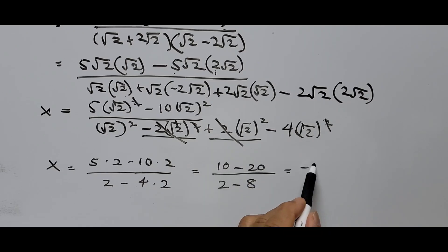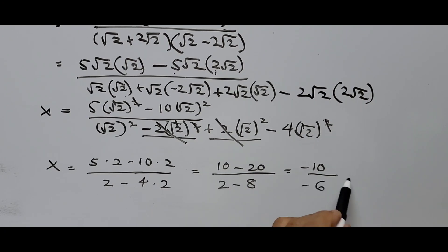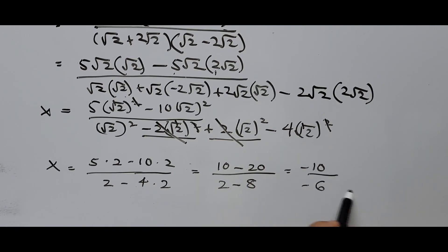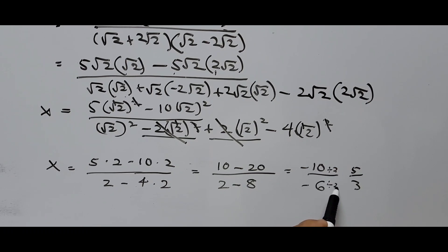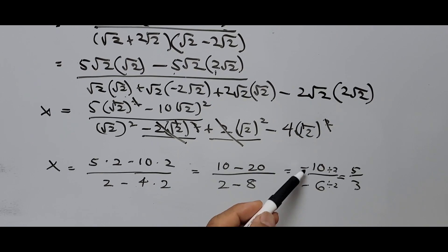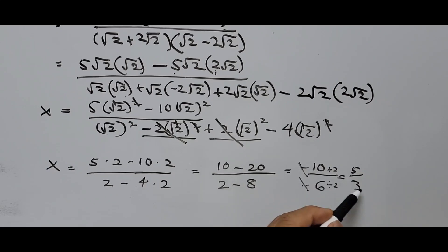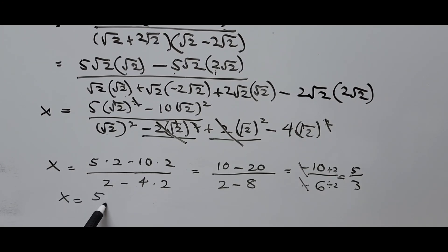So that's 10 minus 20 is negative 10, divided by negative 8. We can simplify by dividing both top and bottom by 2: 10 divided by 2 is 5, and 8 divided by 2 is 4 — wait, 6 divided by 2 is 3. Since both the numerator and denominator are negative, they turn positive, so the value of x is positive 5 thirds.